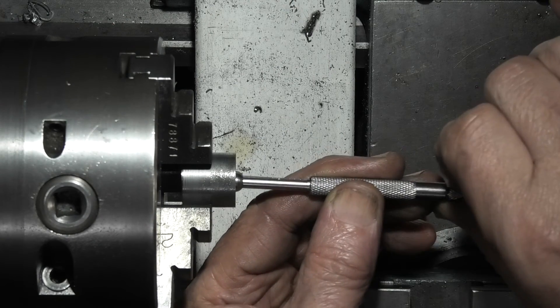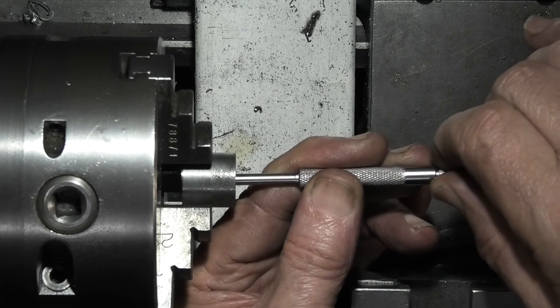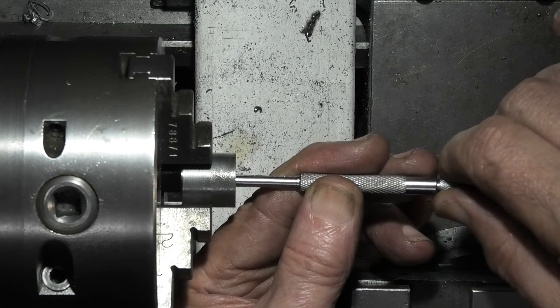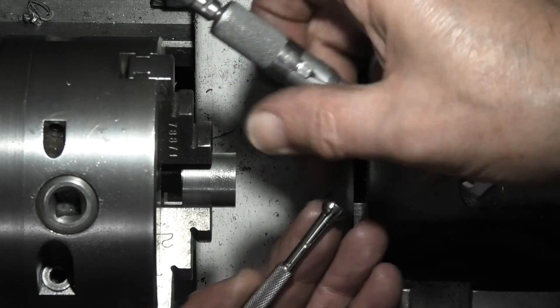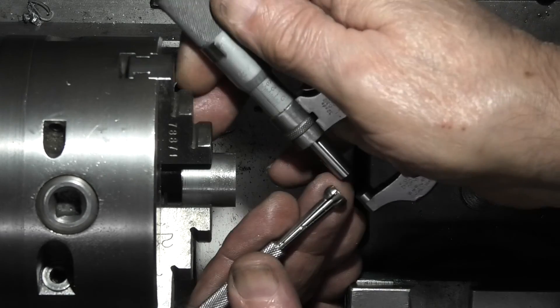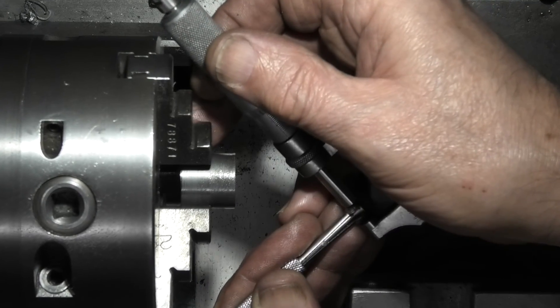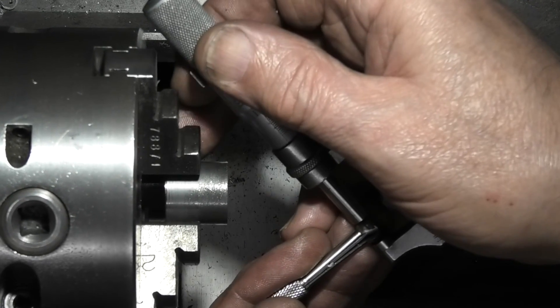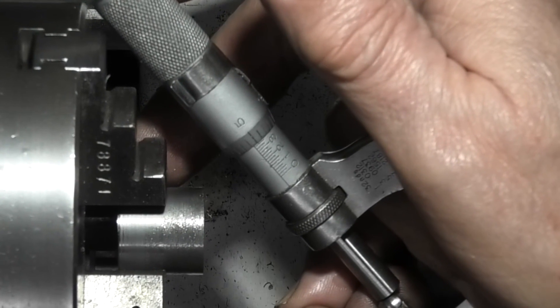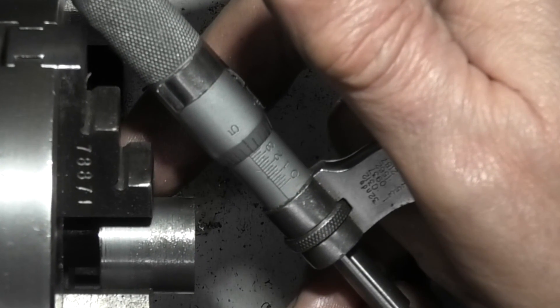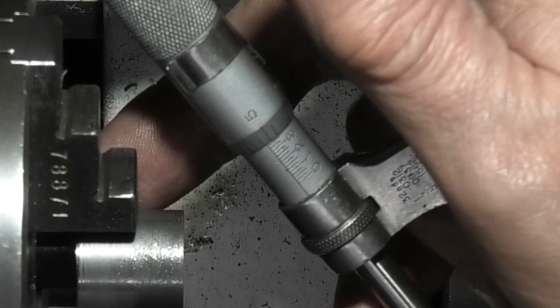Once more, put the ball gauge in. Micrometer. It's a couple of tenths different than the other bore, but that could be me with the measuring. So bore size, I'm going to say it's the same.